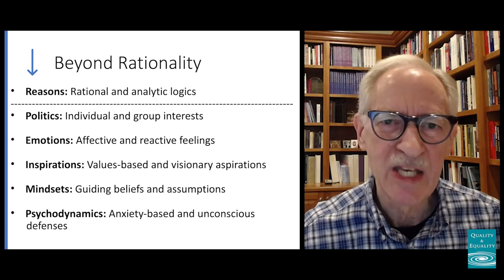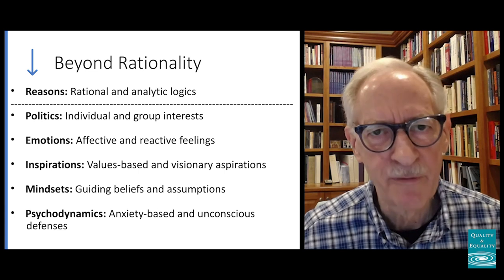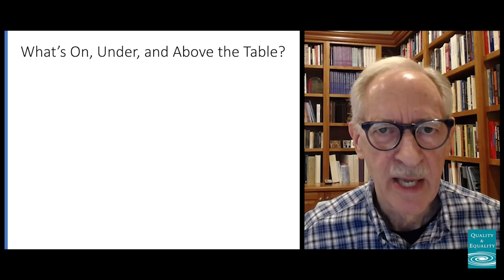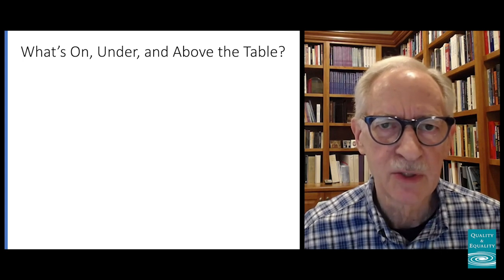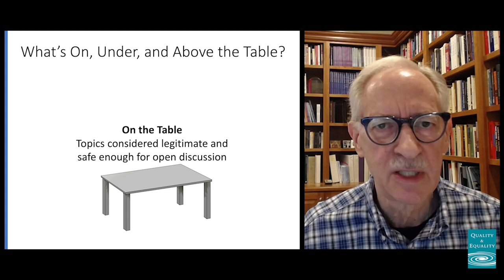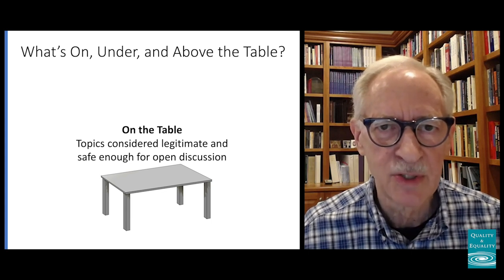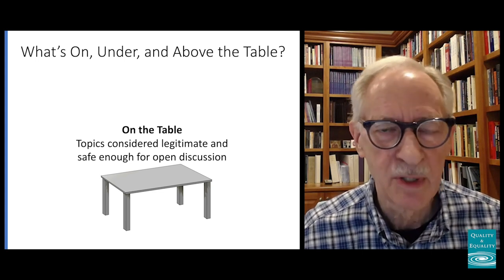Now I'd like to take you to another way of thinking about covert processes or hidden dynamics, using a metaphor that is almost universally used across most cultures: what's on the table, what's under the table, and I'm going to add what's above the table. What's on the table are the kinds of things routinely discussed in the organization — things having to do with finances, budgets, performance — things that are almost always engaged, even if not always dealt with well.